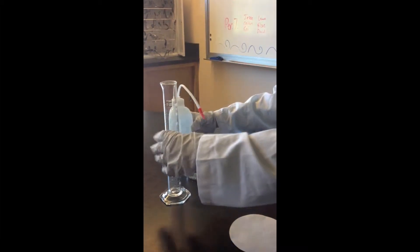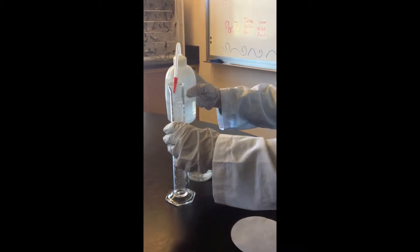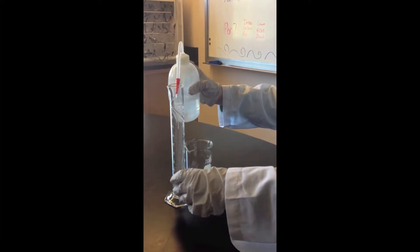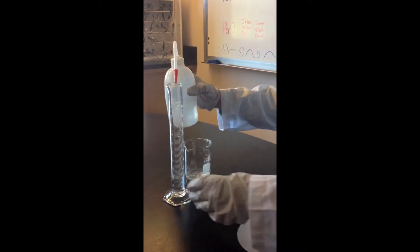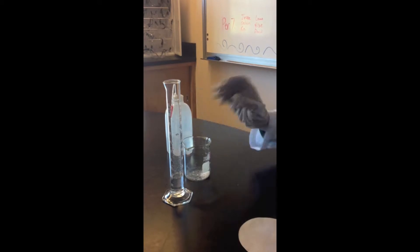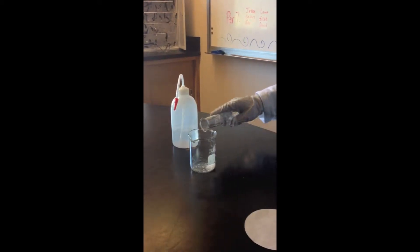Pour 20 ml of water into the graduated cylinder. Then pour the water into the beaker with the Silver Nitrate.